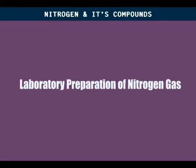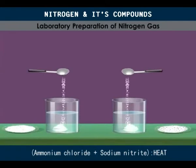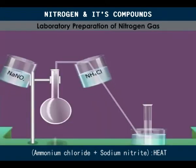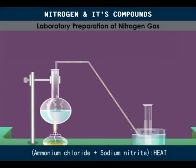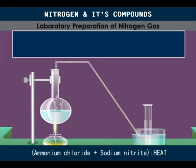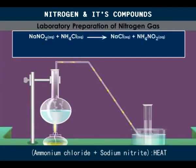In the laboratory, nitrogen is prepared by heating a solution containing equal amounts of ammonium chloride and sodium nitrite. In this experiment, sodium nitrite reacts with ammonium chloride to form ammonium nitrite. This is an example of a double decomposition reaction.